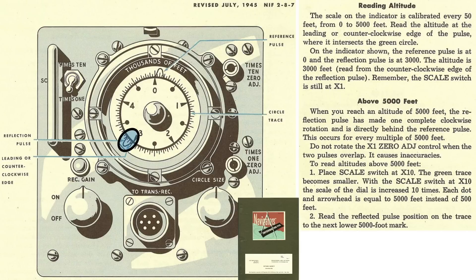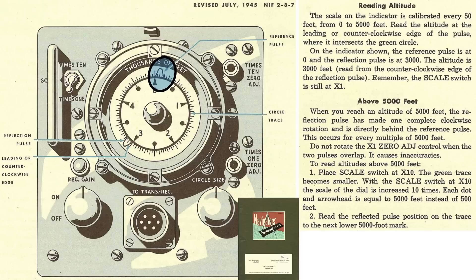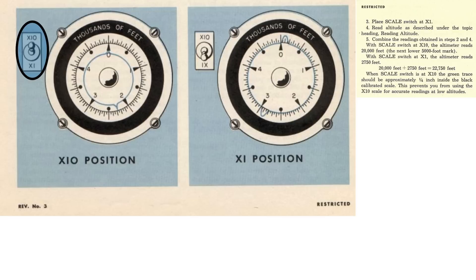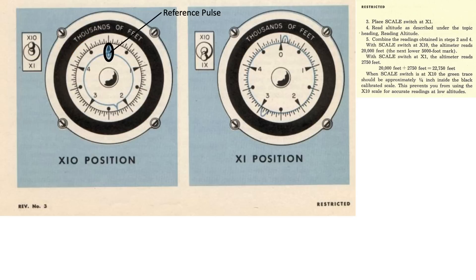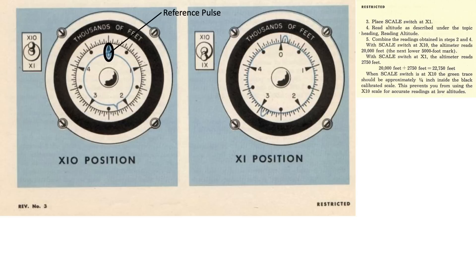As the plane climbs, the reflection pulse lobe will travel clockwise around the circle trace and will loop past the stationary reference pulse lobe at an absolute altitude of five thousand feet. Toggle the scale switch to the x10 position. The circle trace scale is now referenced from zero to fifty thousand feet rather than five thousand feet. When the scale toggle is switched from 1x to 10x, both the reference and reflection pulse indicators change in shape from a lobe to a line. The stationary reference pulse line does not move. Based on this indicator's gauge, the absolute altitude is around 22,800 feet.